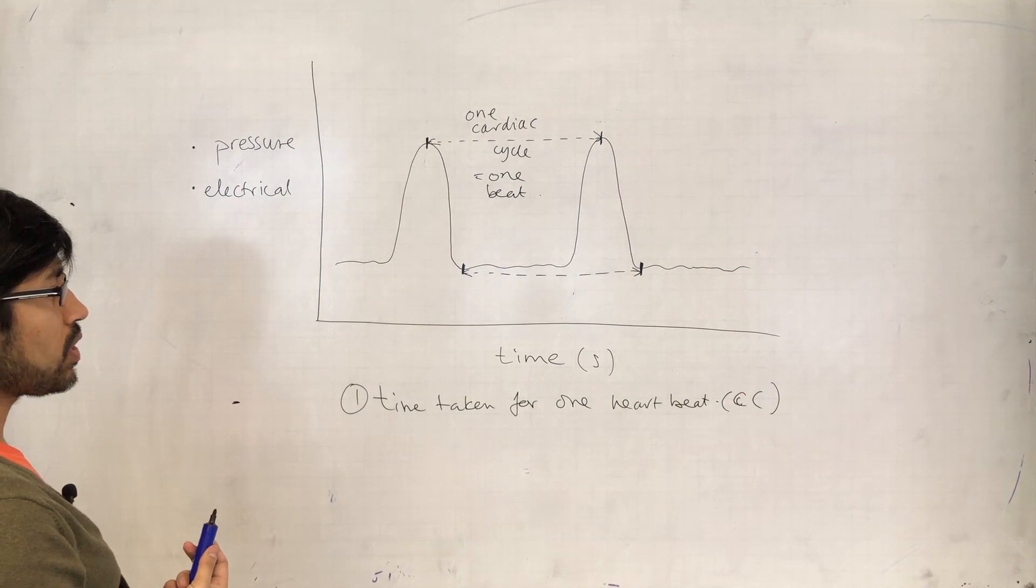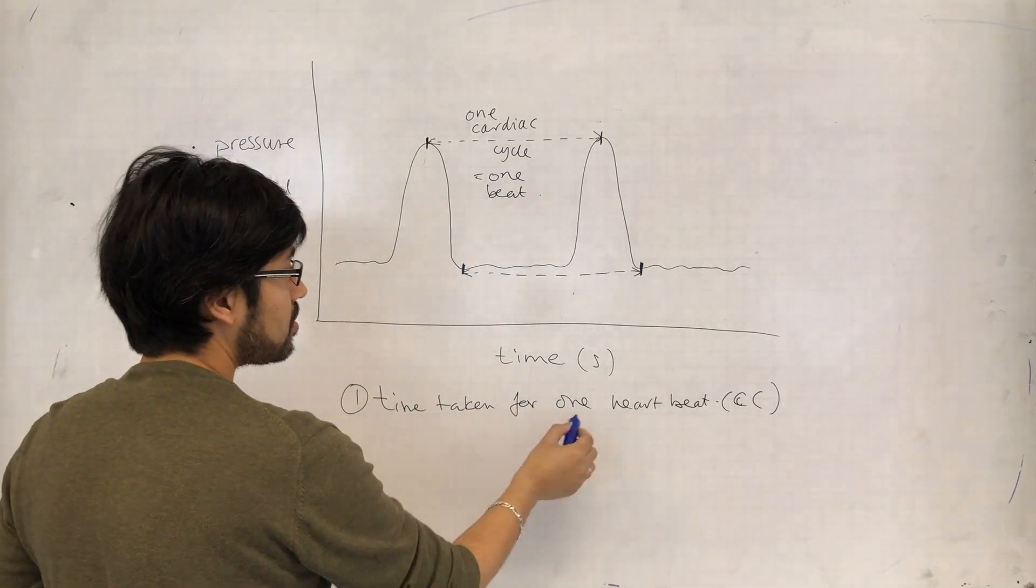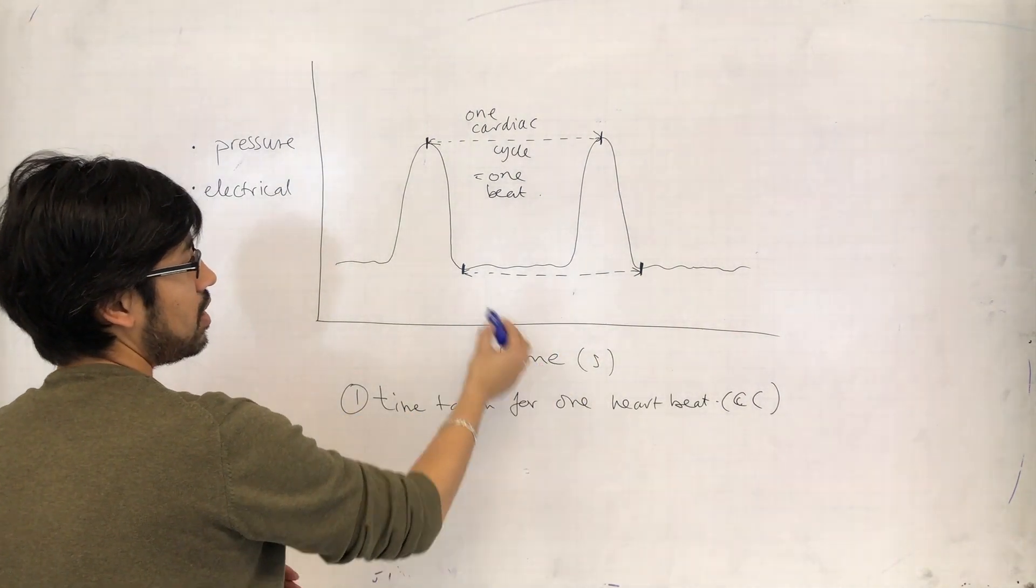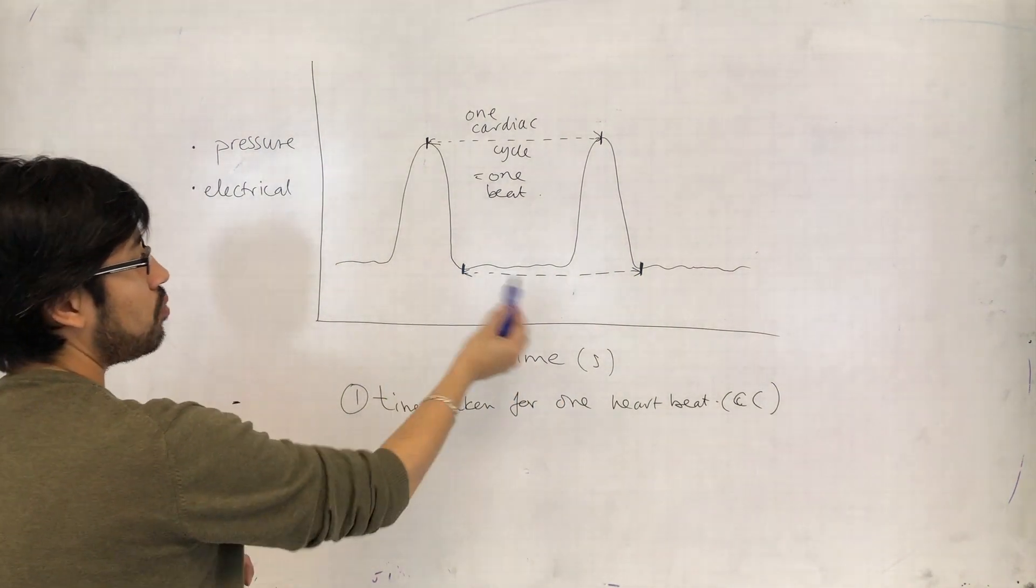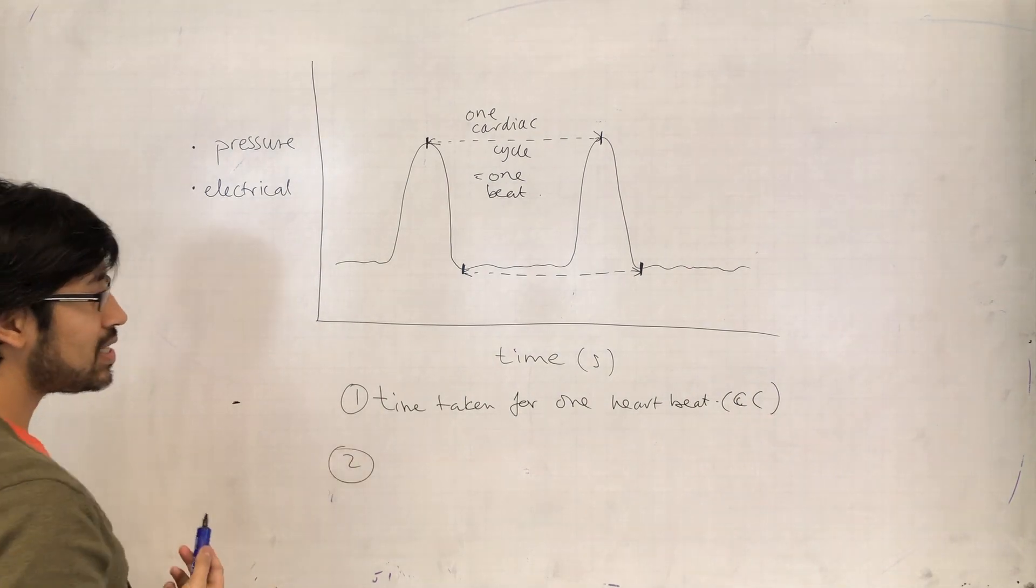Once I have the time - so I use the x-axis and I use my ruler and work out how much time it has taken for one cardiac cycle - then the next thing I have to do...